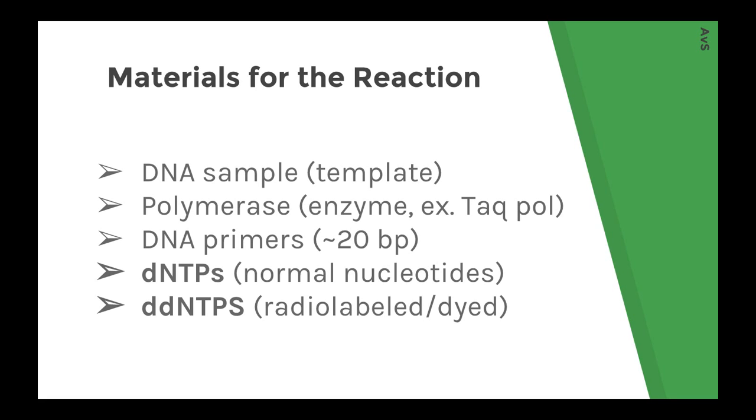Because polymerase cannot just replicate some strand of DNA from scratch and need something to work off of, we're also going to need DNA primers, around 20 base pairs long. And we're also going to need dNTPs that the polymerase can use to extend the primer and to copy the DNA sample.